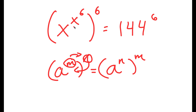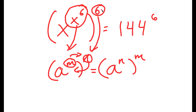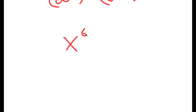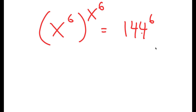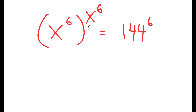So right here, I have x to the power of x to the power of 6, to the power of 6. We can call x to the power of 6 as m, and the outer 6 as n. Switching their places, I now get x to the power of 6, to the power of x to the power of 6, is equal to 144 to the power of 6. The goal of all of this is to make the equation in the form a to the power of a is equal to b to the power of b.